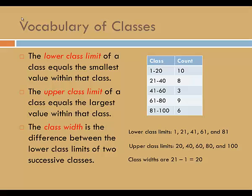The class width is the difference between the lower class limits of two successive classes. So, for example, if we take the first two classes, the successive lower class limits are 1 and 21, and the difference between the two is 20.